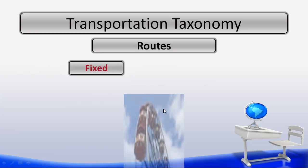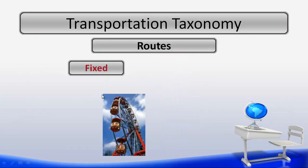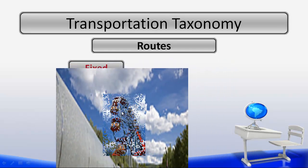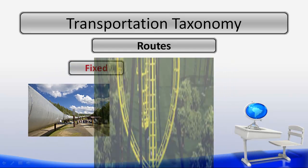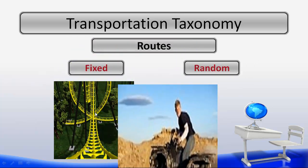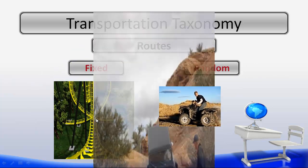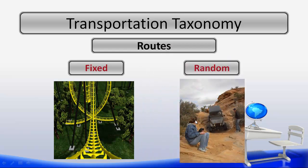And finally, to wrap up the taxonomy, we have our routes. Our first route is a fixed route. Here we see an example of a fixed route. This one is an example of an oil line. And then we have another example of a fixed route. And here we have some examples of some random routes.